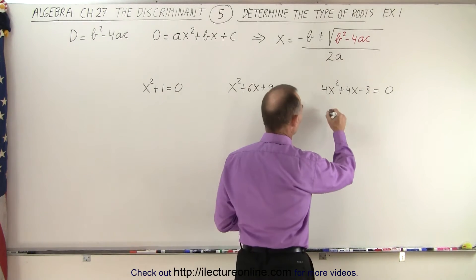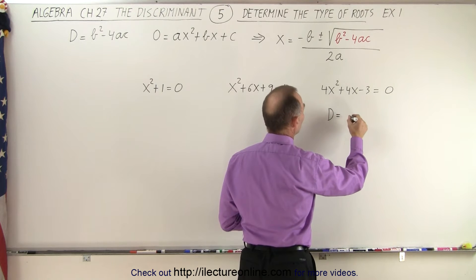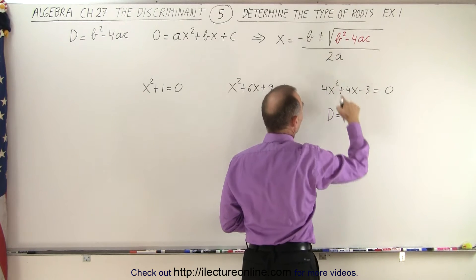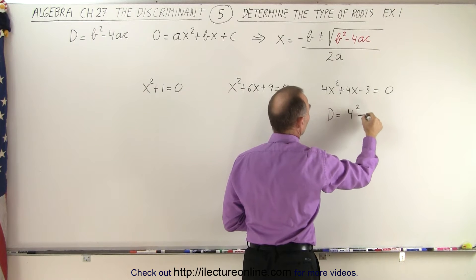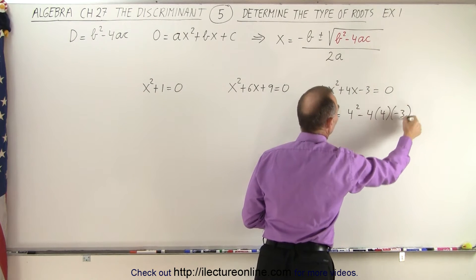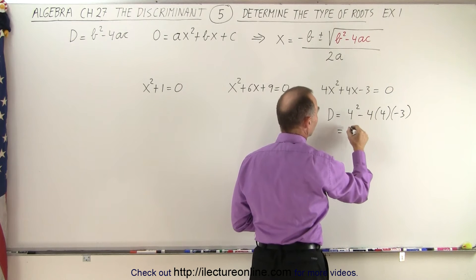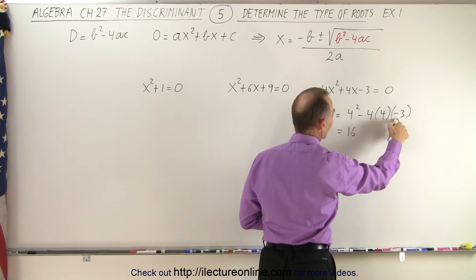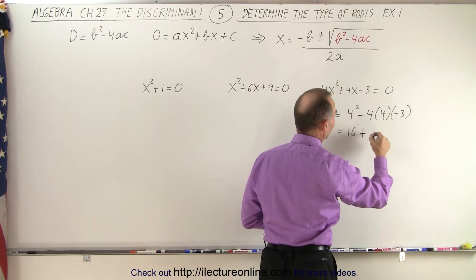So in this case, the discriminant is equal to b squared minus 4ac. b is 4, so that would be 4 squared, minus 4 times a times c, which is negative 3. Notice that's equal to 16. Minus times the minus is plus. 16 times 3 is 48.